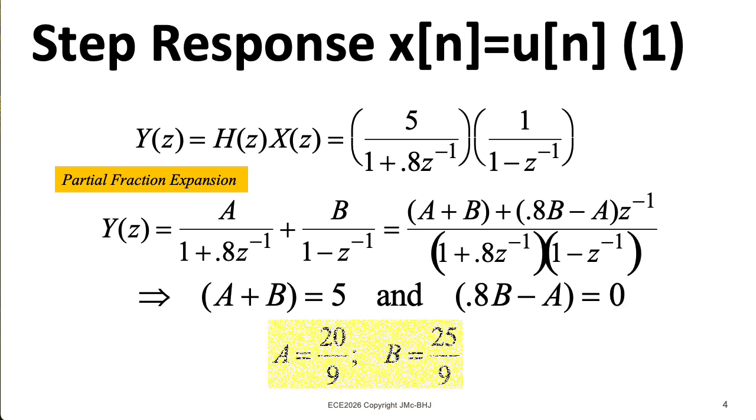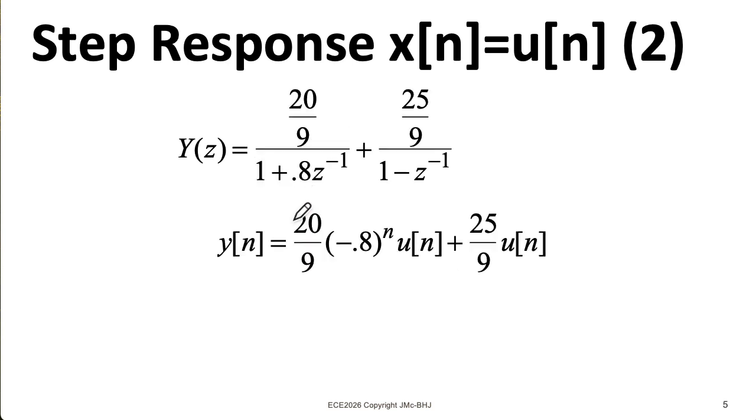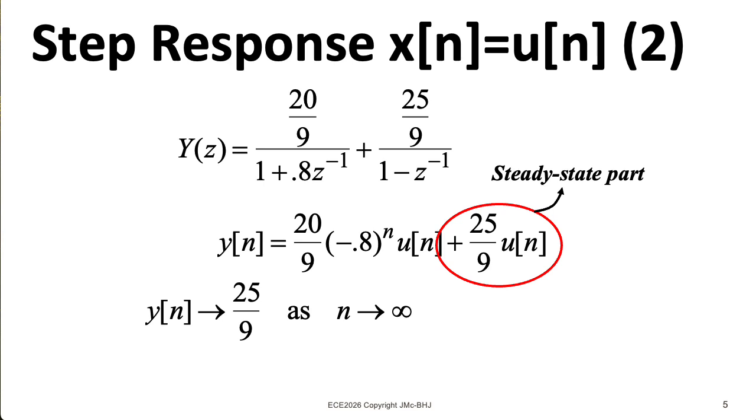Solving these two equations for a and b gives us a equals 20 over 9, and b equals 25 over 9. So plugging those values for a and b into this form gives me this Z-transform, which I can invert using our tables to give us the output in the time domain. We see that the first term decays as n goes to infinity, so we consider that the transient part. The second term keeps going forever, so we consider that the steady state part. So our signal approaches that constant of 25 over 9 as n goes to infinity.